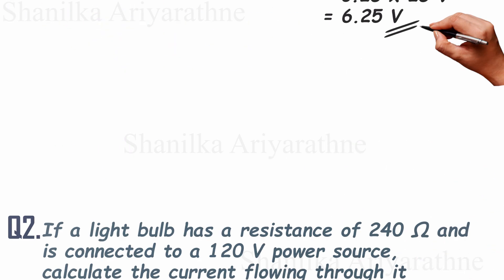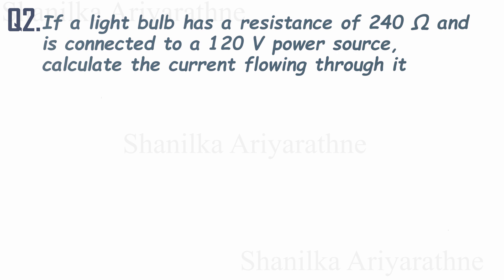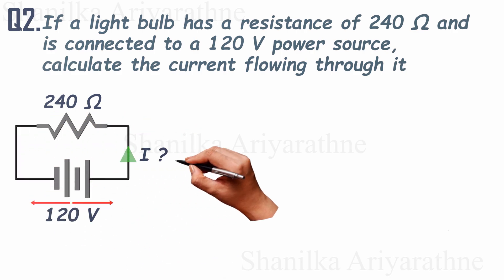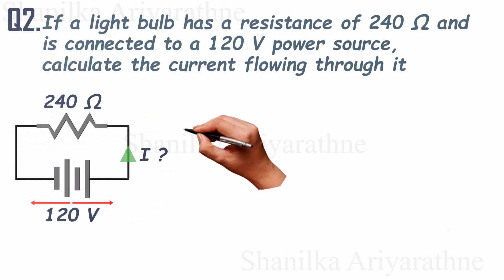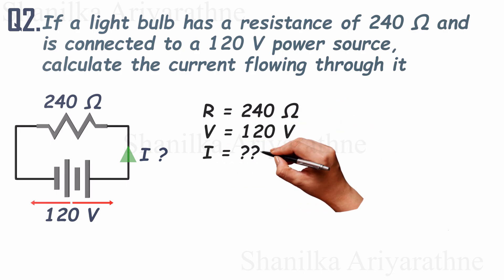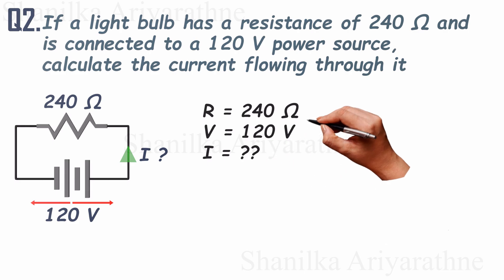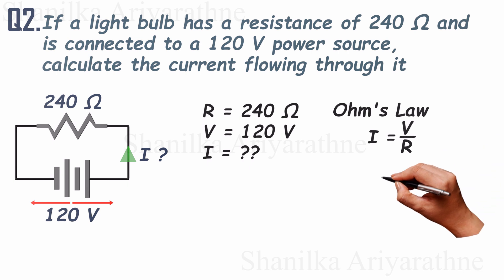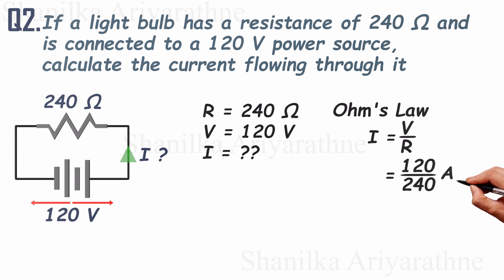Let's move on to the next question. If a lightbulb has a resistance of 240 ohms and is connected to a 120-volt power source, calculate the current flowing through it. First, sketch the circuit — this will help you understand the problem better. The resistance is 240 ohms and the voltage is 120 volts. Using Ohm's law — current equals voltage divided by resistance — and substituting the values, the current flowing through the lightbulb is 0.5 amperes.